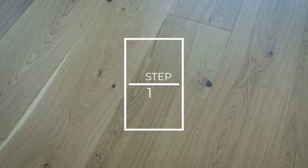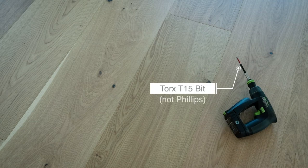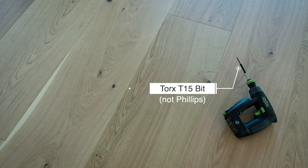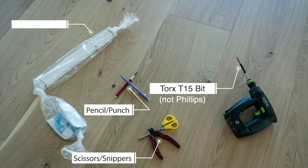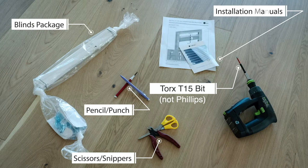Step 1. Ensure you have all the necessary supplies to complete the installation. You will need a drill with a Phillips head one bit, ideally in a magnetic holder, a pencil or punch, scissors or snippers, your blinds package, and your installation manuals.